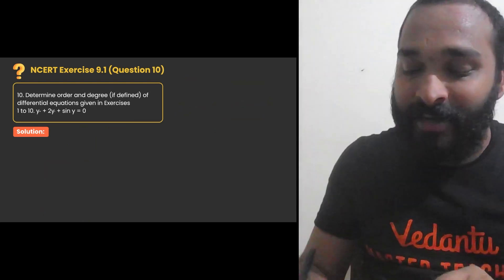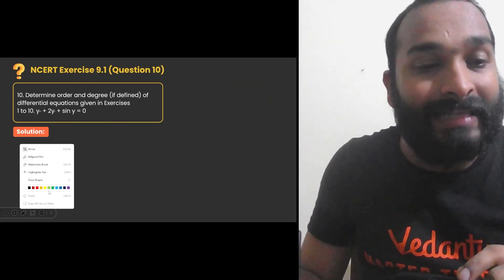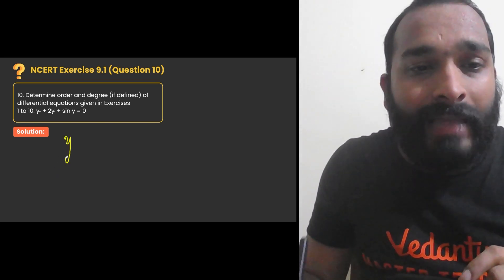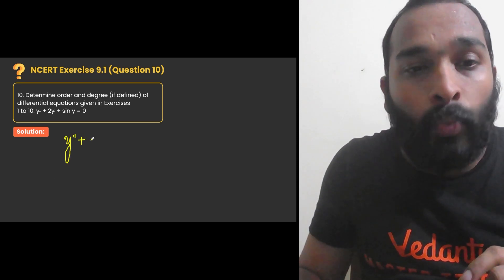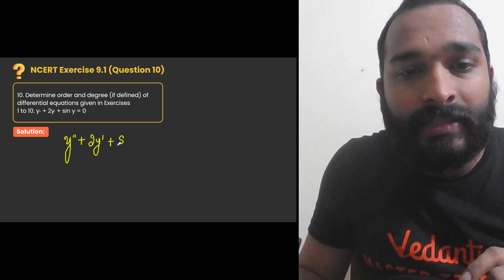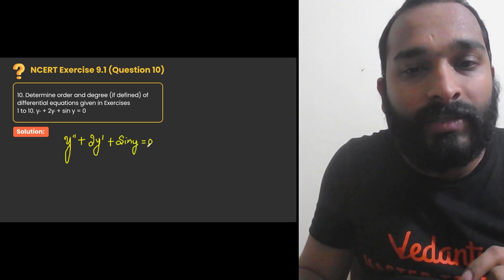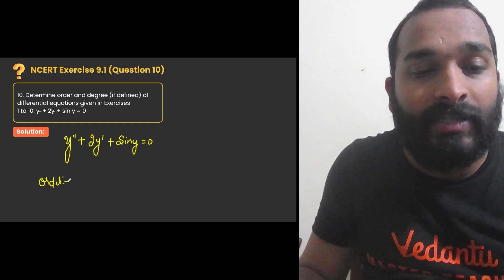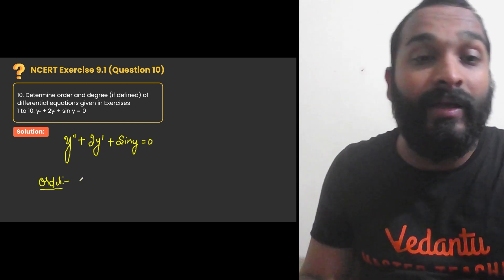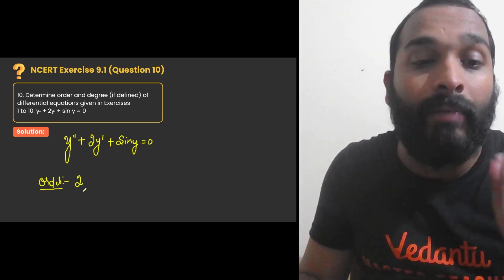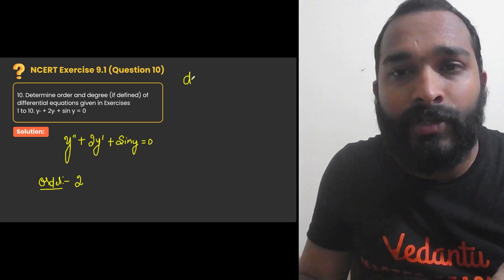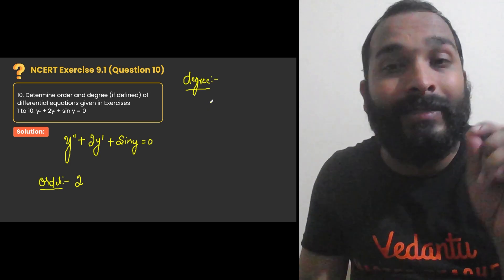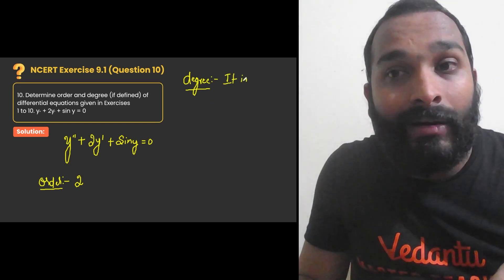Let us solve question number 10 of exercise 9.1 of the chapter differential equation. Determine order and degree if defined. The differential equation is y double dash plus 2y dash plus sine y equal to 0. Order is the highest derivative — what is the highest derivative here? Y double dash. So order is 2.